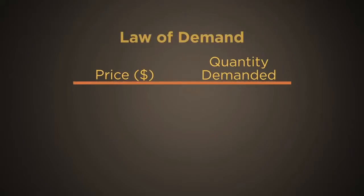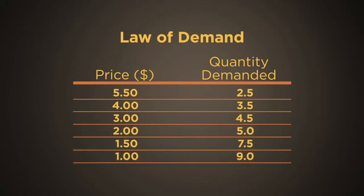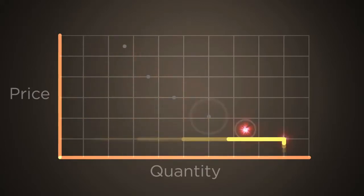Economists refer to the relationship between price and quantity demanded as the Law of Demand. The combination of the quantities people are willing and able to buy of a good or service at various prices constitutes a demand schedule. When the demand schedule is graphed, the demand curve is downward sloping.